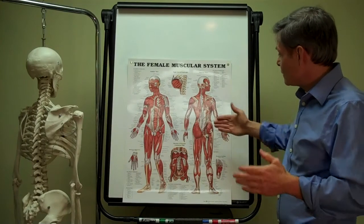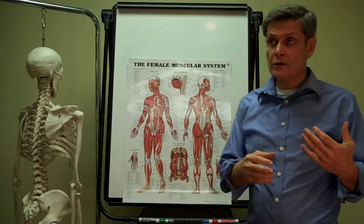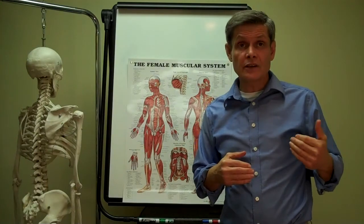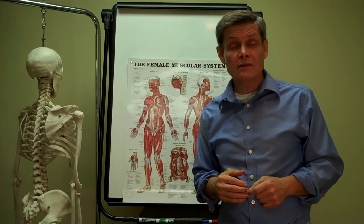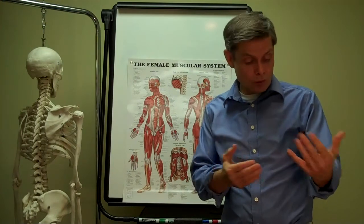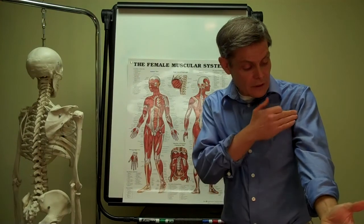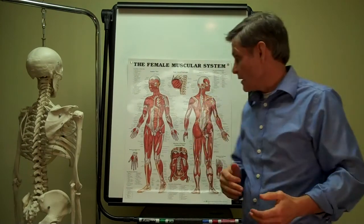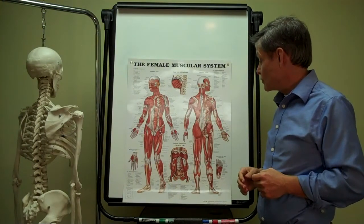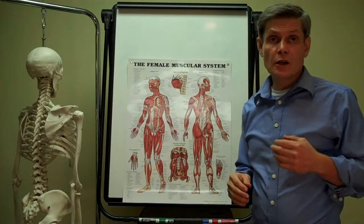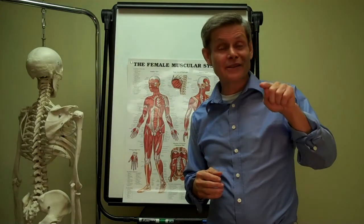Then we go down into the arm muscles and the forearm muscles. When we do the forearm muscles, you'll learn about certain muscles that are involved in a condition called golfer's elbow and tennis elbow, which have to do with muscles that attach to the bottom of the arm bone. Then we go down into the intrinsic hand muscles, which is very useful in helping folks who have carpal tunnel syndrome, which we talked about in the last video.